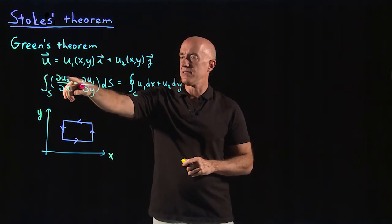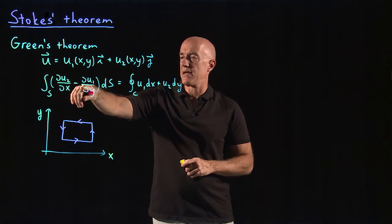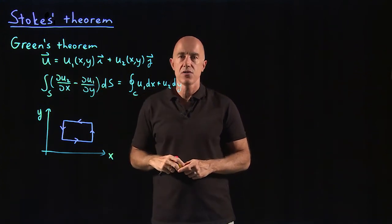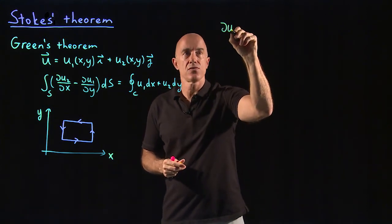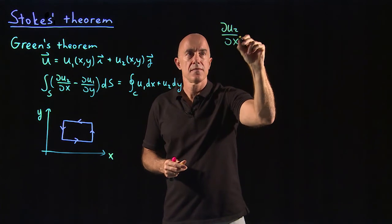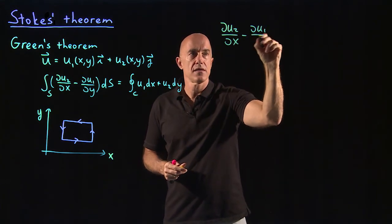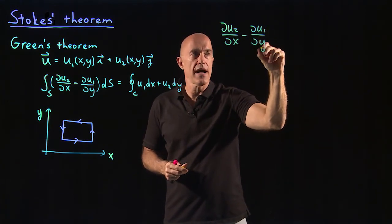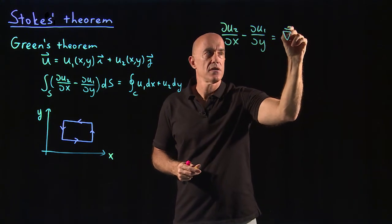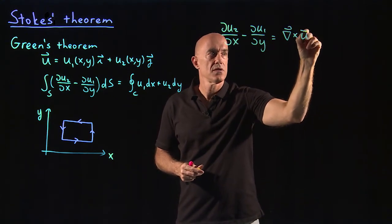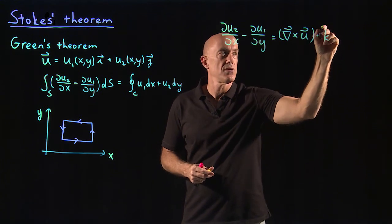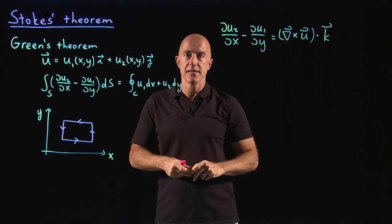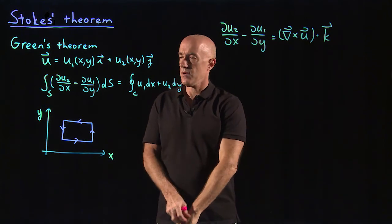I mentioned that this du2/dx minus du1/dy looks like a curl. In fact, du2/dx minus du1/dy is the curl of u, but it's the third component, dotted into the unit vector in the z direction.